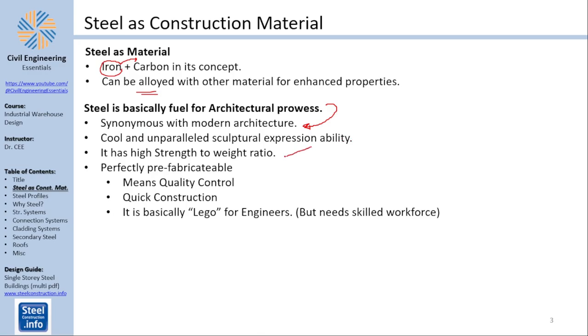It has also a high strength to weight ratio and is always coming or most probably coming prefabricated which means quality control, quick construction. It's basically Lego for engineers but and this is very important it needs skilled workforce. People who are welding steel structures in most countries need special licenses and certificates to do so.